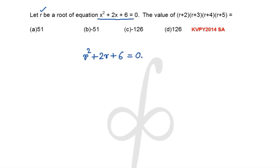And the value of this expression r² + 2r + 6 will be utilized to get the product of (r+2)(r+3)(r+4) and (r+5). So let us make groups of two.